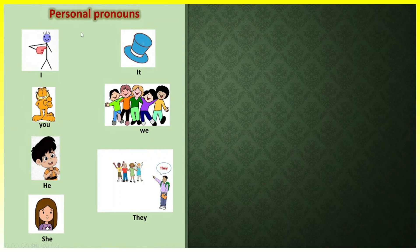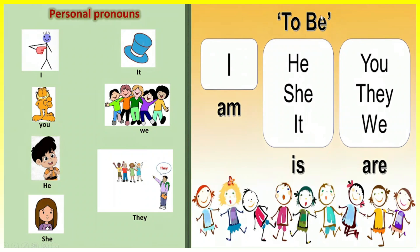We learned personal pronouns: I, you, he (for male), she (for female), it (for things, objects, or animals), we (for plural), and they. Verb to be: I am / I'm, he is / he's, she is / she's, it is / it's, you are / you're, they are / they're, we are / we're.